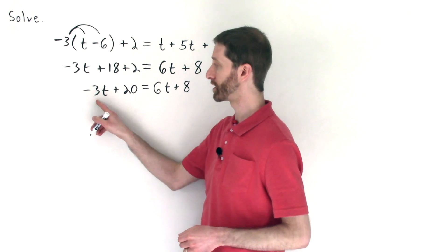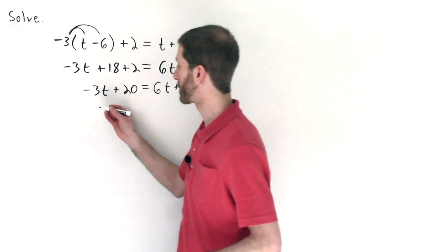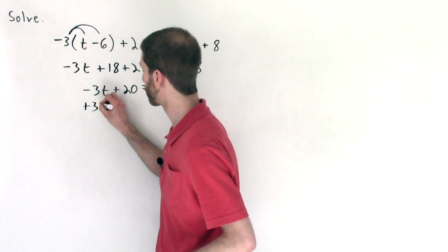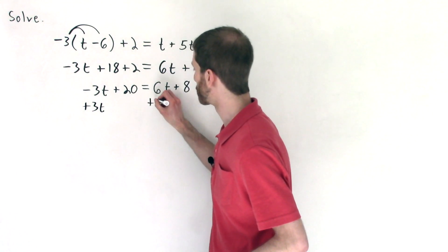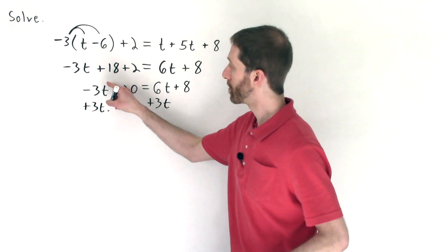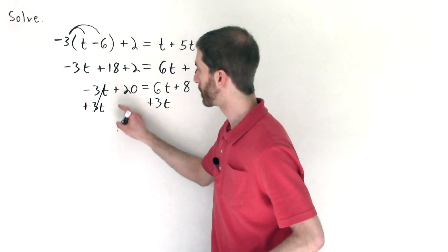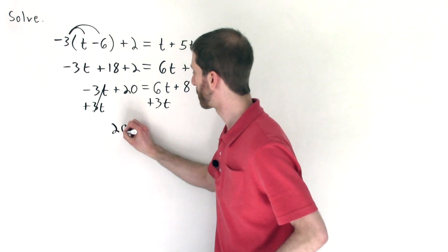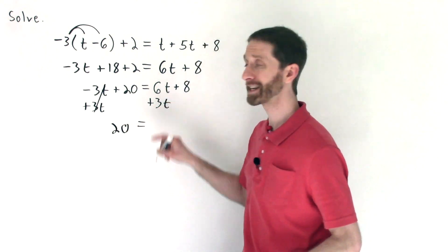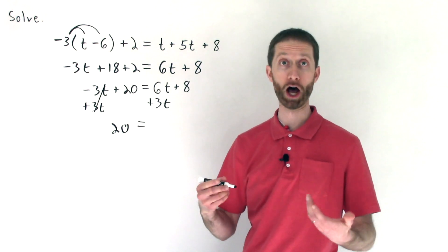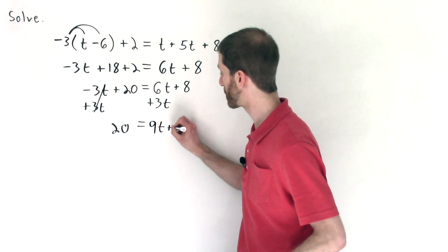I like to undo minus 3t. So I'm going to add 3t to both sides of the equation plus 3t. And of course, what we do to one side, we'll do to the other. Note that these cancel out to equal zero. We're left with a positive 20 is equivalent to 6t and 3t is 9t plus 8.